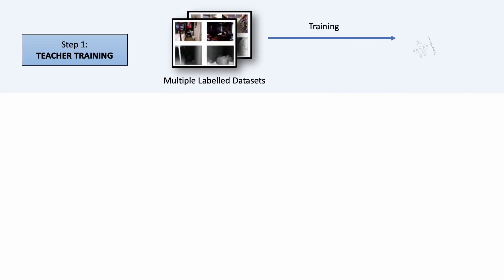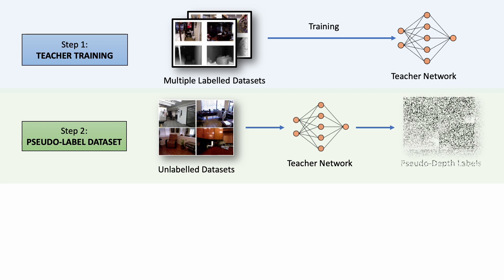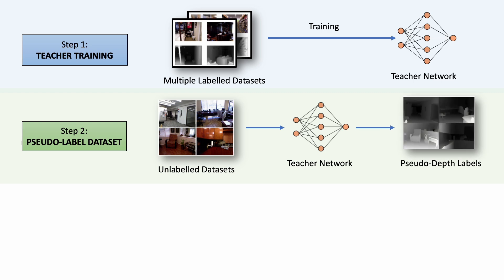The original Depth Anything V1 model from 2023 is trained in a three-step process. First, a neural network called the teacher model is trained for supervised depth estimation using a combination of multiple publicly available datasets. Once trained, step two begins where the teacher model annotates millions of unlabeled images to create a massive new dataset with pseudo-depth labels. These labels are called pseudo because they are AI-generated and may not represent the actual ground truth depth.